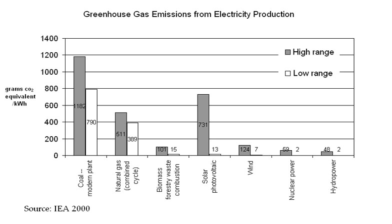Compact fluorescent lamps use only 33% of the energy and may last 6–10 times longer than incandescent lights. LED lamps use only about 10% of the energy an incandescent lamp requires. Energy efficiency has proved to be a cost-effective strategy for building economies without necessarily growing energy consumption. For example, California began implementing energy efficiency measures in the mid-1970s, including building code and appliance standards with strict efficiency requirements, and California's energy consumption has remained approximately flat on a per capita basis while national U.S. consumption doubled.